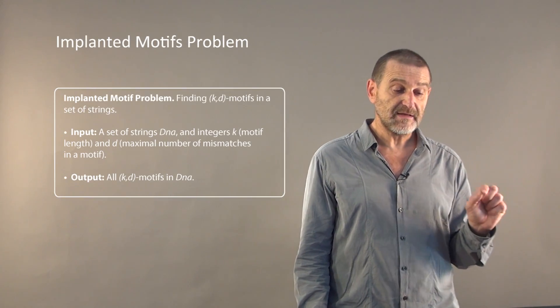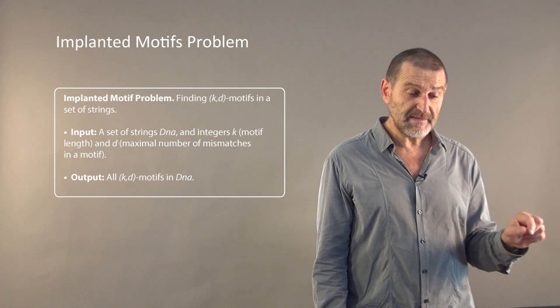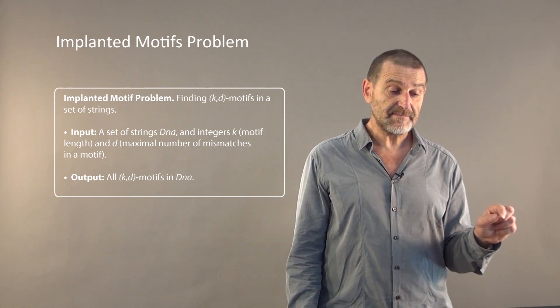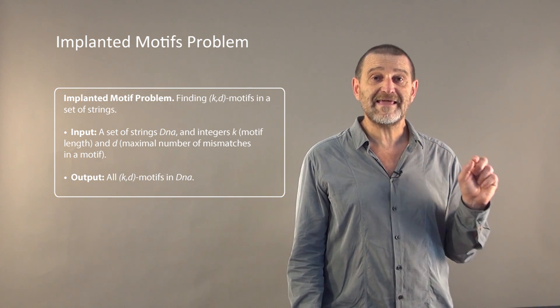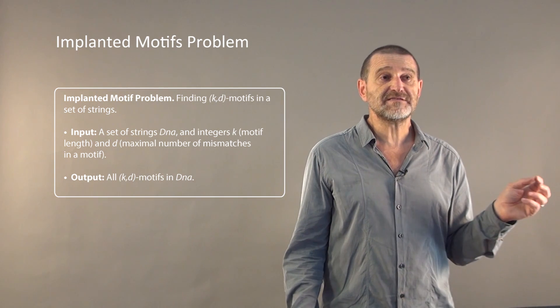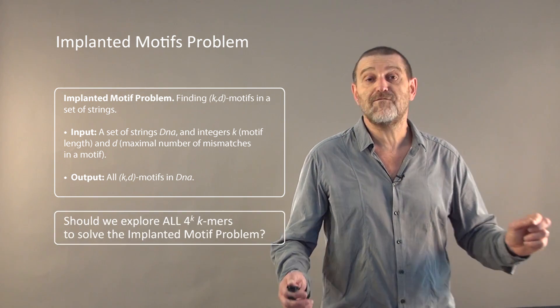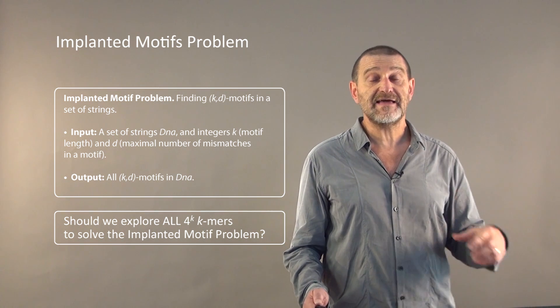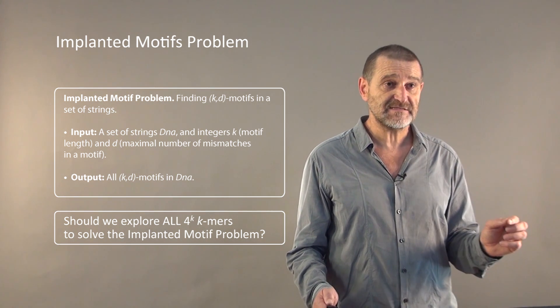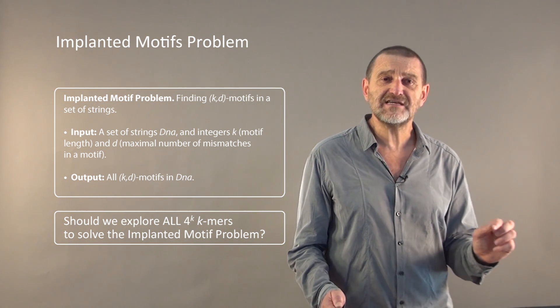That's why we need to solve a different problem that I call the implanted motif problem. In this problem, you are given a set of strings DNA and integers K and D, and you need to find all K and D motifs in DNA. Now, how should we solve this problem? Should we possibly explore all possible 4 to the power K k-mers and see which of them represent K and D motifs? That will take time. Let's try something else.